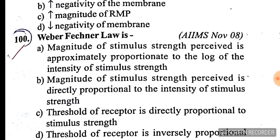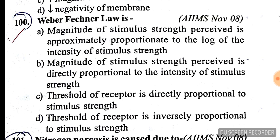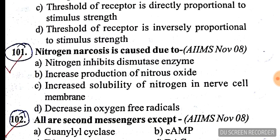Question 100: Weber-Fechner law states — see all four options carefully. The answer is: the magnitude of stimulus strength perceived is approximately proportionate to the log of the intensity of the stimulus. Nitrogen narcosis is caused due to — the answer is C, increased solubility of nitrogen in cell membranes.